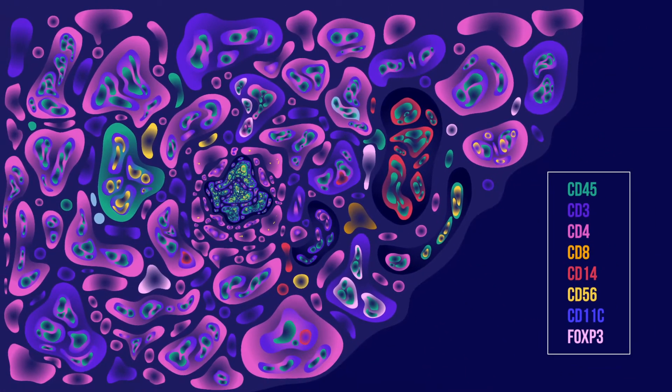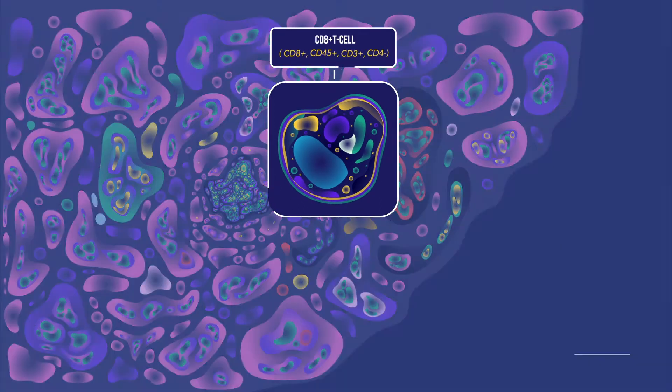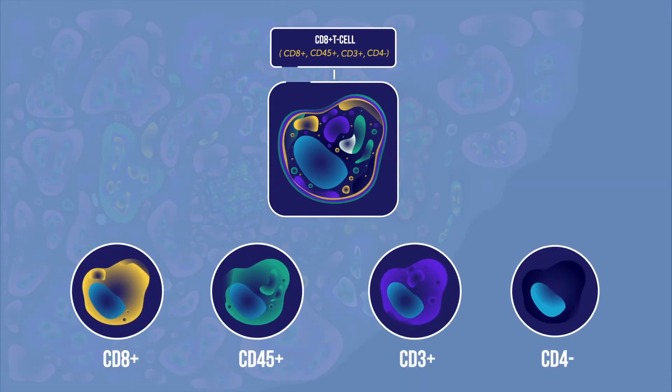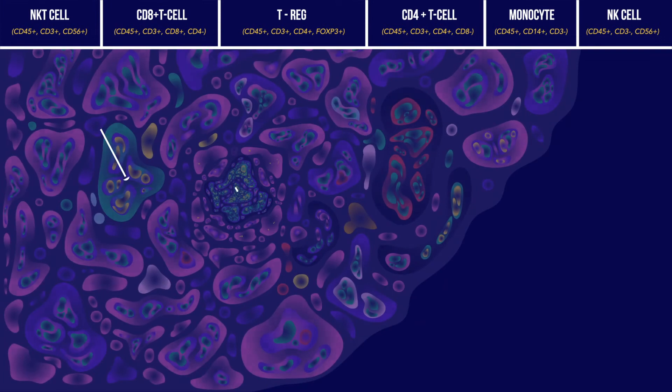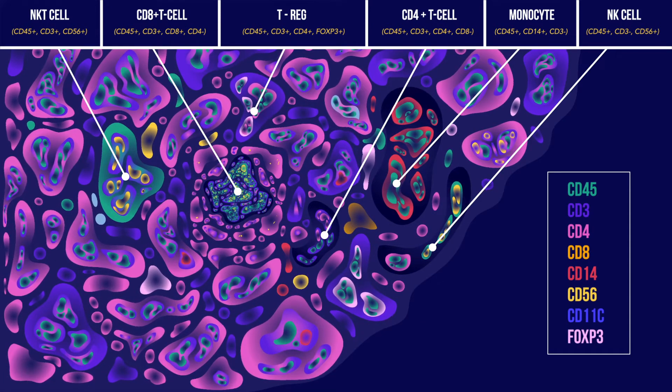With CHIP Cytometry by Canopy Biosciences, you can quantify the expression level of each protein biomarker in your assays for every individual cell in your sample and maintain the critically important spatial and morphological information.